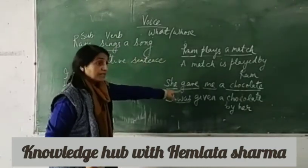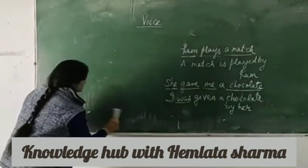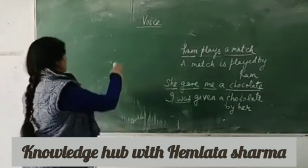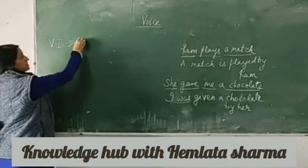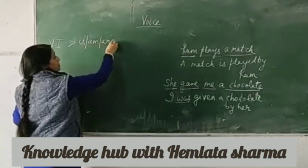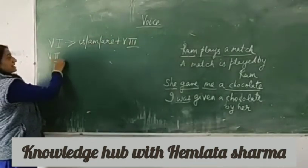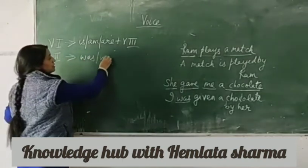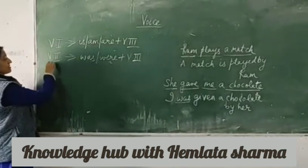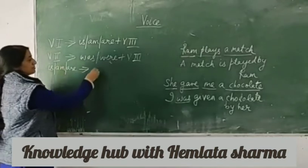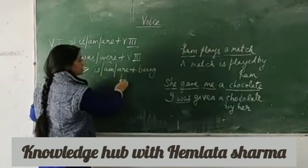Why do we have these changes in the helping verb? Here is a table. Verb in first form: whenever in the active voice the verb is in the first form, it changes into is/am/are plus verb in third form. Verb in second form changes into was/were plus verb in third form. And if in the sentence there is is/am/are, it changes into is/am/are plus being plus verb in third form.